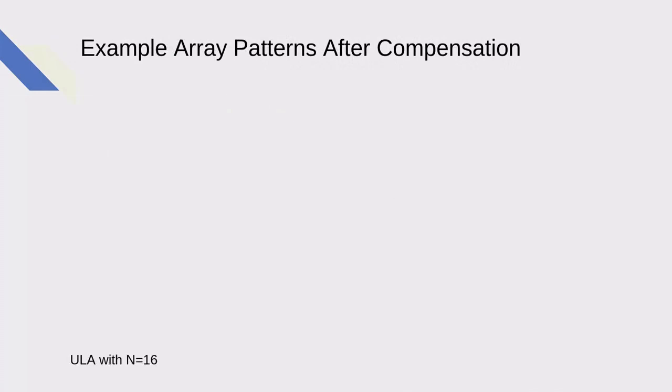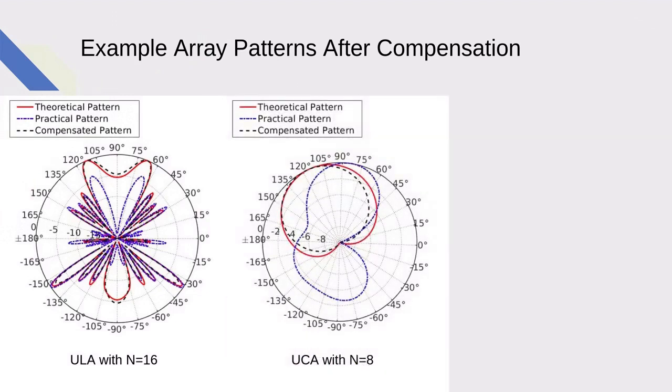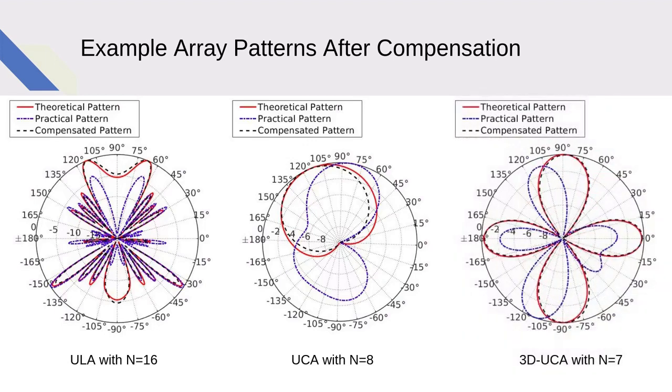Let's see the example array pattern after compensation. In all array configurations, we are able to produce the compensated patterns, which are the patterns generated in the presence of mutual coupling, but have become similar to our desired theoretical patterns.